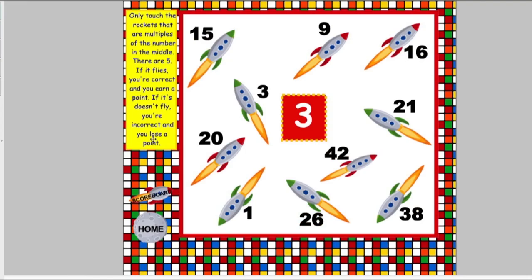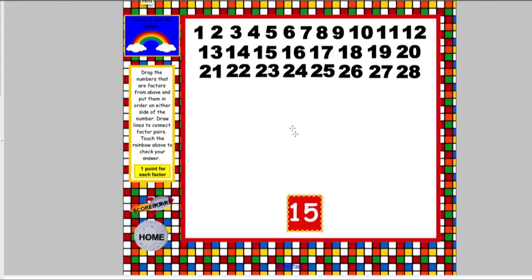In the multiples and factors game, students will practice making factor rainbows and playing with multiple rockets. A help page is provided to make the factor rainbow. To play, students click on a rainbow, then they drag down factor pairs on each side. They connect the factor pairs with different colors of markers, and then check the yellow box to check their answer.